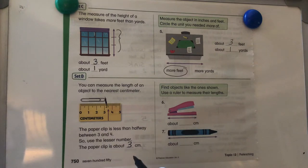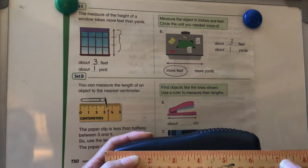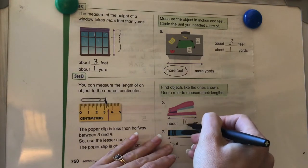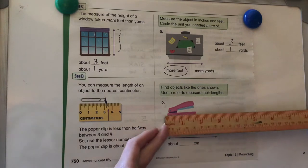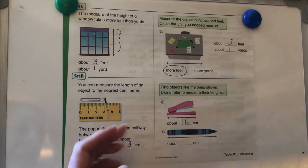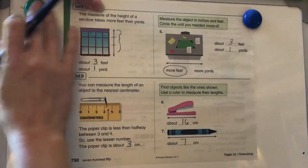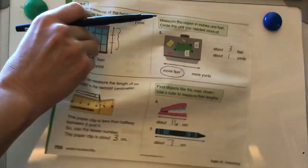Find objects like the one shown and use a ruler to measure their lengths. We're doing it in centimeters this time. Here's my stapler. It's about 16 centimeters. At your house it might be a little different. And I'm just going to go ahead and measure this one. Here it is about seven centimeters is how long this crayon is. Let's go ahead and go on to our next page of reteaching.